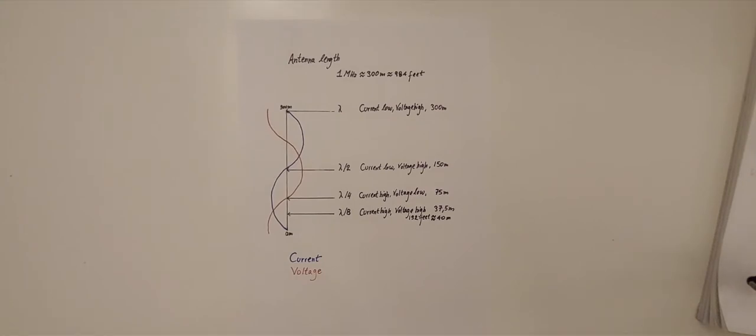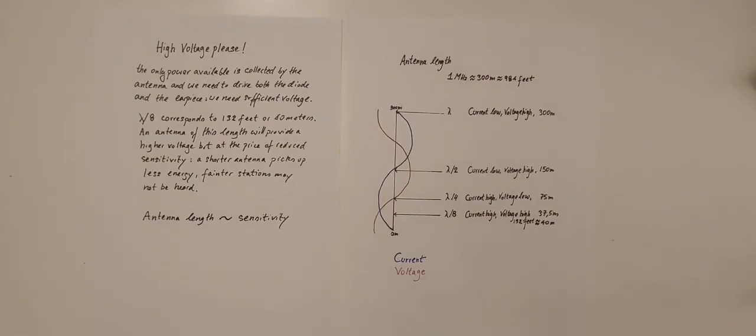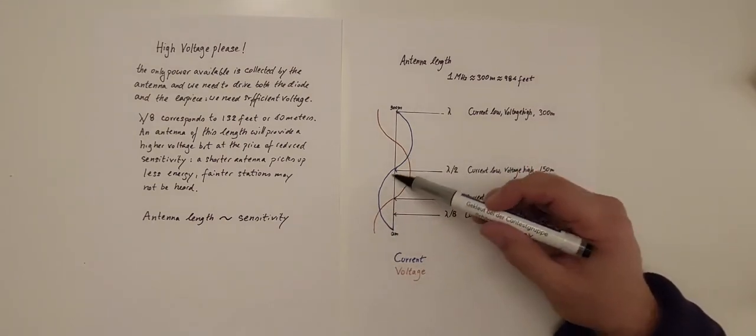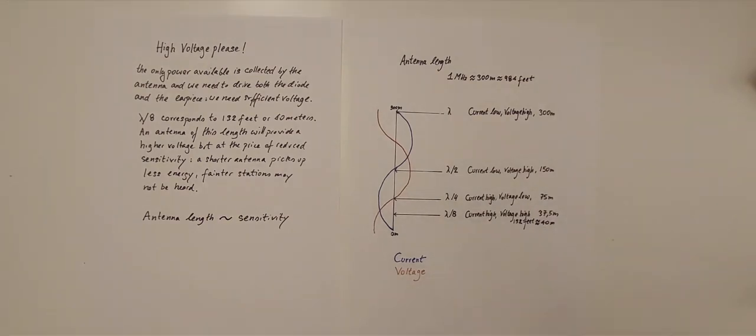Crystal radios are voltage driven. The diode or the crystal have a threshold, a voltage threshold. The earpieces require voltage. There is no external power other than that harnessed by the antenna available for the crystal radio to function. The equivalent length of an antenna wire for 1 MHz, which is in the middle of the AM broadcast band, is 300 meters or 984 feet. Since the energy wave traveling in the antenna at resonance has its two components of voltage and current out of phase, there are shorter lengths that can be taken in consideration, at a loss though of captured energy, less sensitivity when the antenna length is shorter.